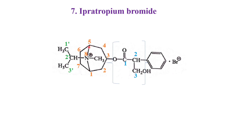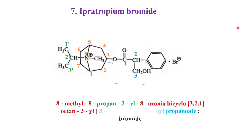There are totally 2 rings, that is why it is a bicyclo. The numbering is 3-2-1 and totally 8 positions, that is why octane. The third portion would be connected here, that is why 3-yl, and in that 3-hydroxy. So in the parent, the third portion is connected with hydroxy, so 3-hydroxy, 2-phenyl — the second carbon is connected with phenyl — so 2-phenyl propanoate, and this one would be bromide. So that is the chemical name.